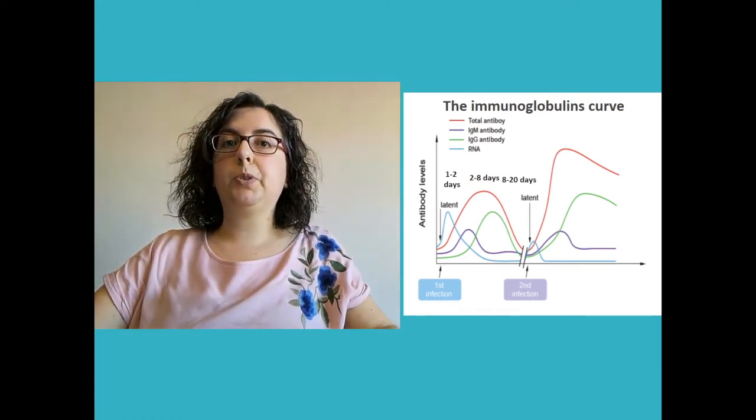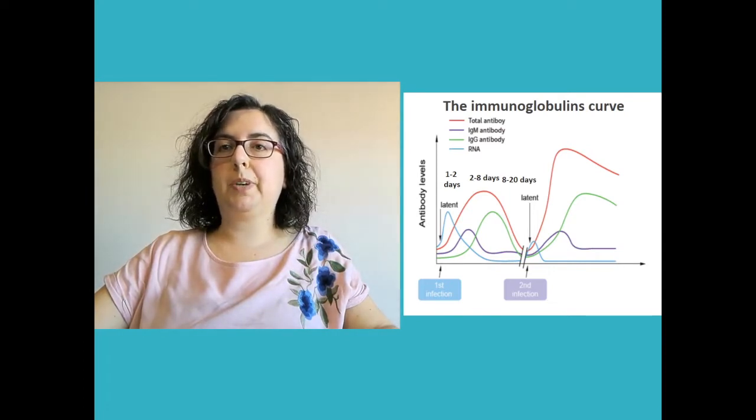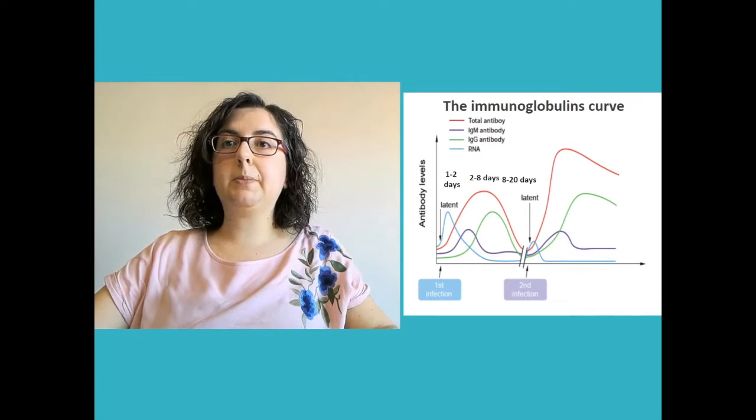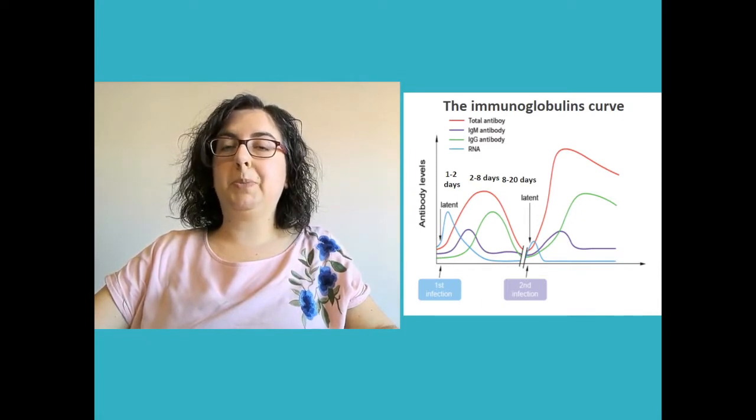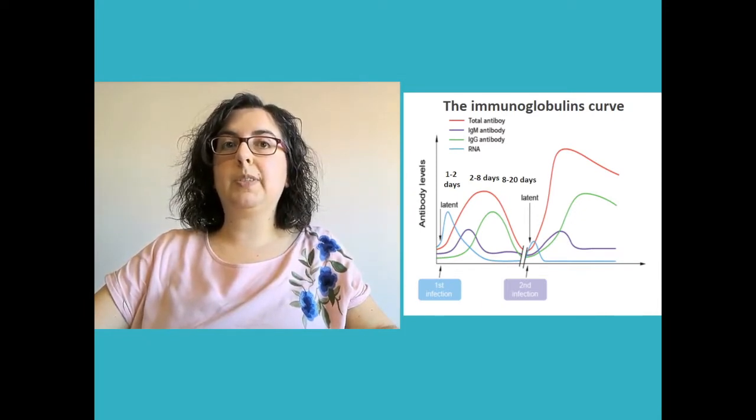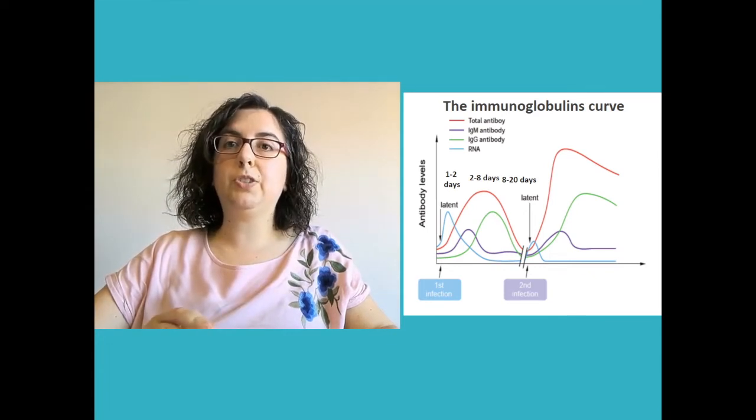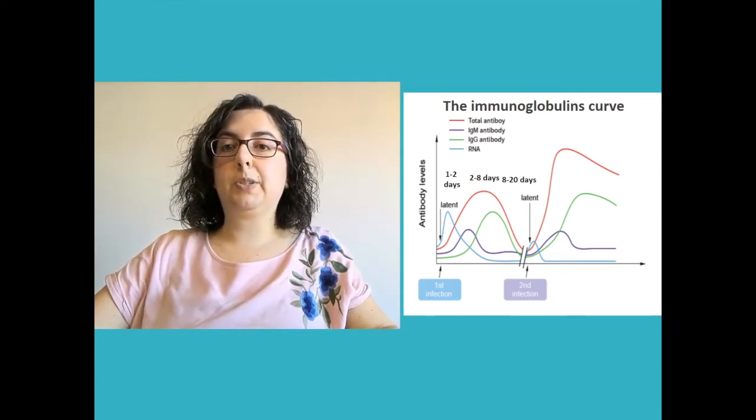IgG are more specific for the virus and are also able to neutralize it. The B cells maintain the memory of the meeting with the virus, so in case of a second interaction, they rapidly proliferate and produce again IgG able to detect and neutralize the virus.